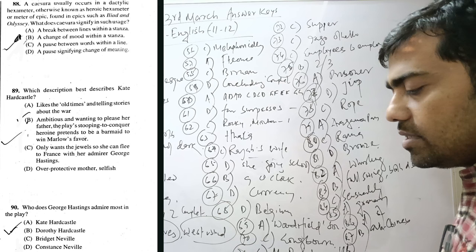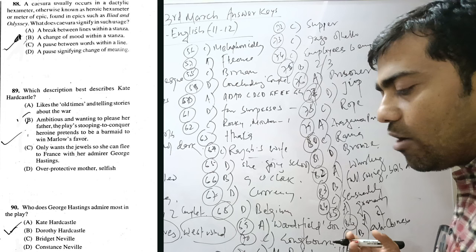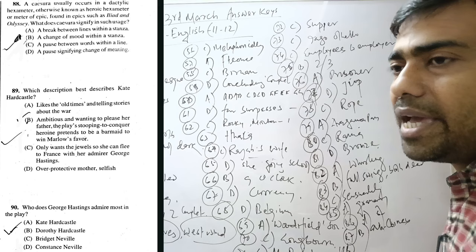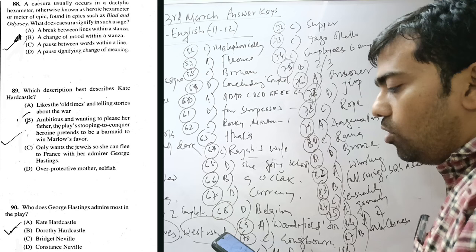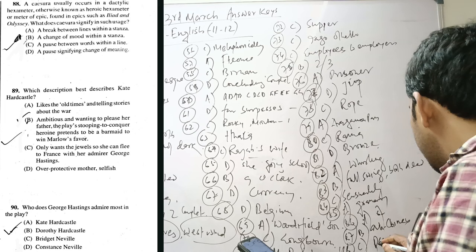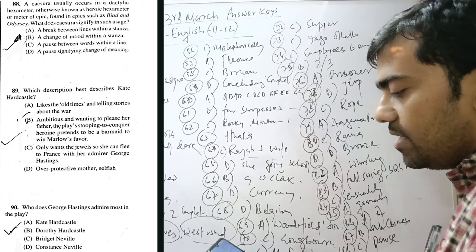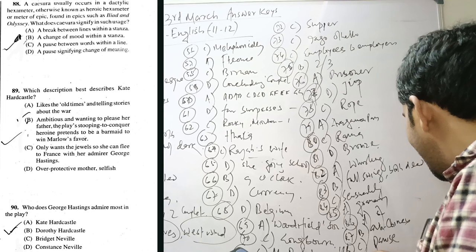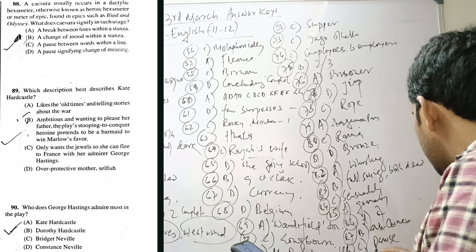So, from Chymist to Buffoon, from high to the low to arouse love turned to ridicule. Question 88. A caesura usually occurs in dactylic hexameter, otherwise known as heroic hexameter or epic meter found in the epics such as Iliad and Odyssey. What does caesura signify? Caesura is a term derived from Italy. Roman term, caesura means pause. It means pause. So, a pause between words within a line. So, where is pause? It is a pause. Where pause is written in the option will be the correct answer. Question 89. Kate Hardcastle or - the long answer will be the right answer. Ambitious and wanting to please.